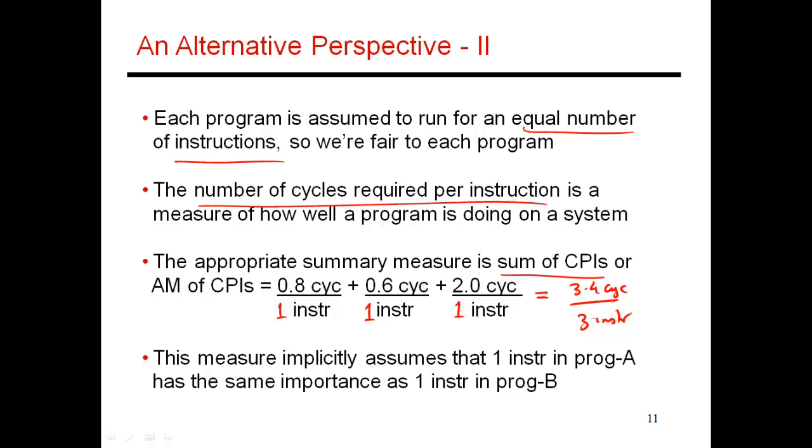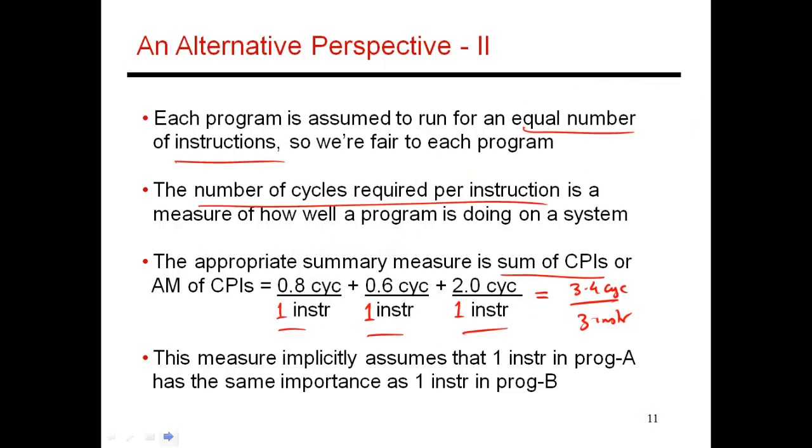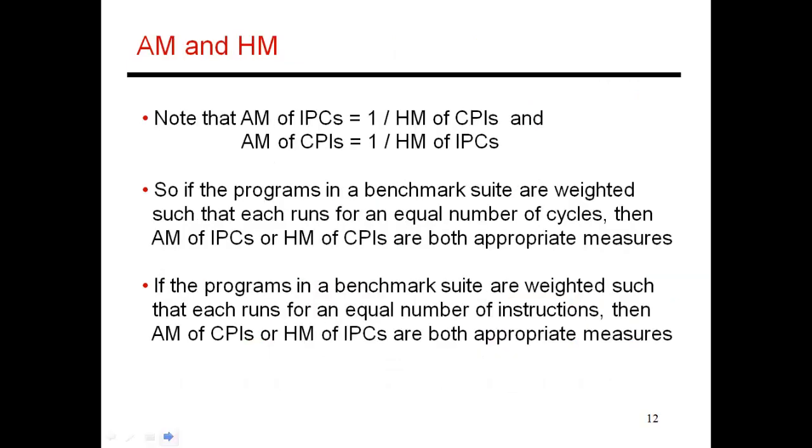Both of these measures are pretty good. They are being fair to every program because every program is either getting to execute the same number of instructions or the same number of cycles, and I was able to do this without using any kind of normalization or weighting. That's why I like this metric, and it also represents something real. It's representing a real workload where each program is running for one instruction or for one cycle. This is a pretty convenient measure which does away with normalization.